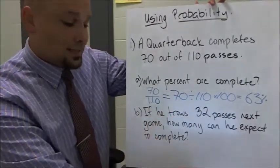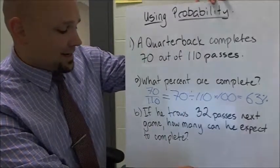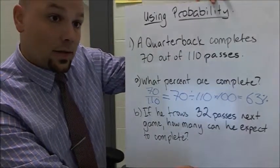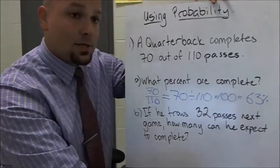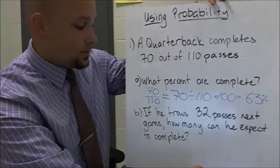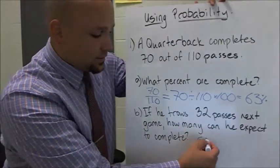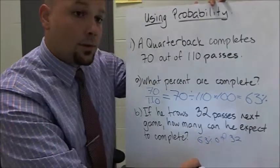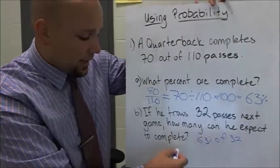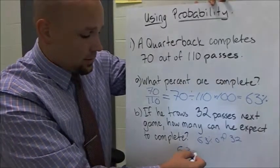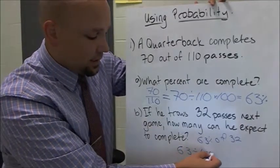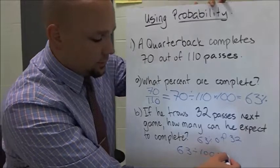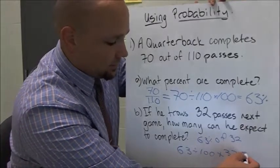If he throws 32 passes next game, how many can he expect to complete? Well, this is the 63 percent will be complete. So what we need to do is figure out 63 percent of 32. So we do that by going 63 percent divided by 100 times 32.